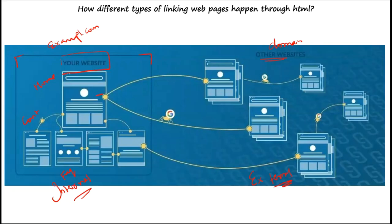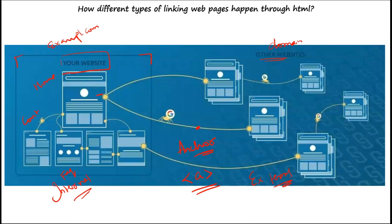These hyperlinks are created with a special tag called the anchor tag, represented by lowercase 'a'. Both types of hyperlinks — internal and external — can be created with HTML. The anchor tag is used to link one page to another, whether in the same website or a different one. Let's write some code and see how it actually works.